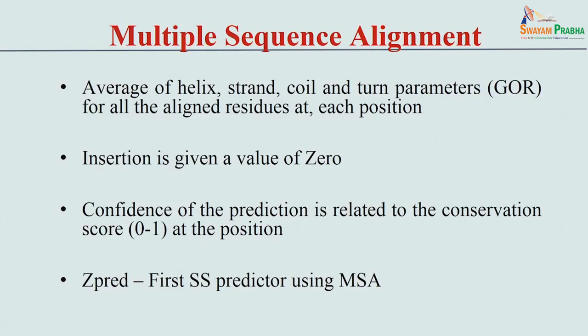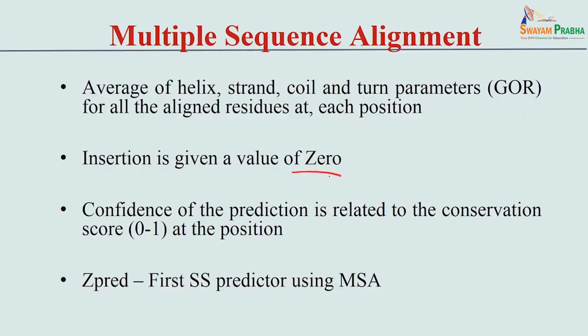We look at which state has the highest frequency and predict accordingly. The confidence increases if the position is highly conserved because we get the same information for the same residue from multiple sequences, giving a high value. If there is an insertion or deletion (a gap), we use a value of 0; otherwise we use the table values for helix, coil, and turn, and look at all four states to predict.